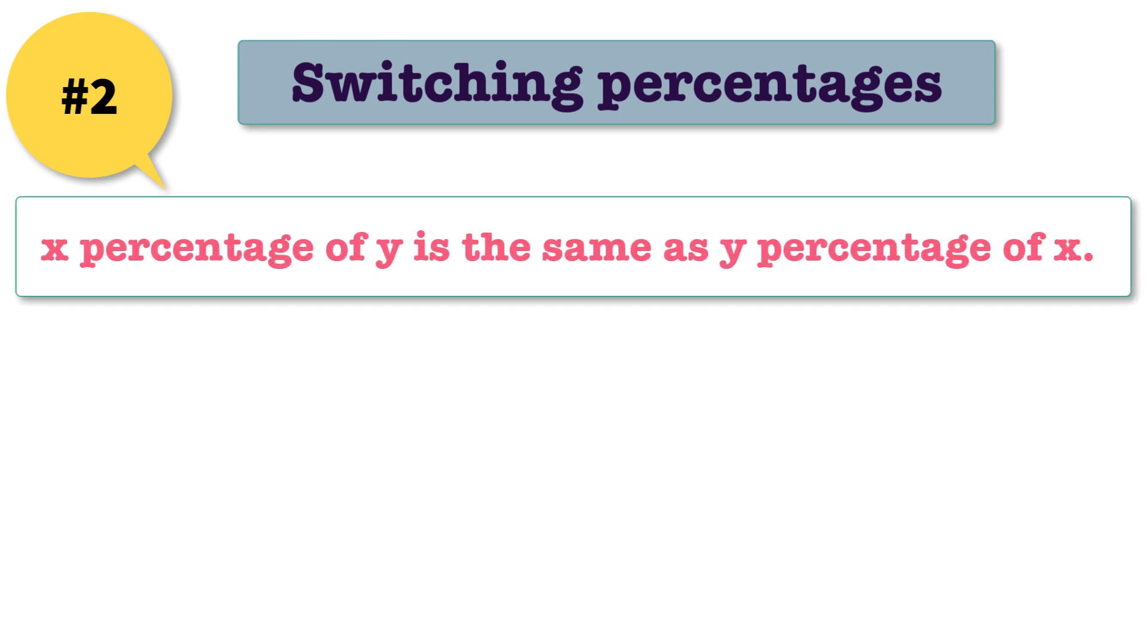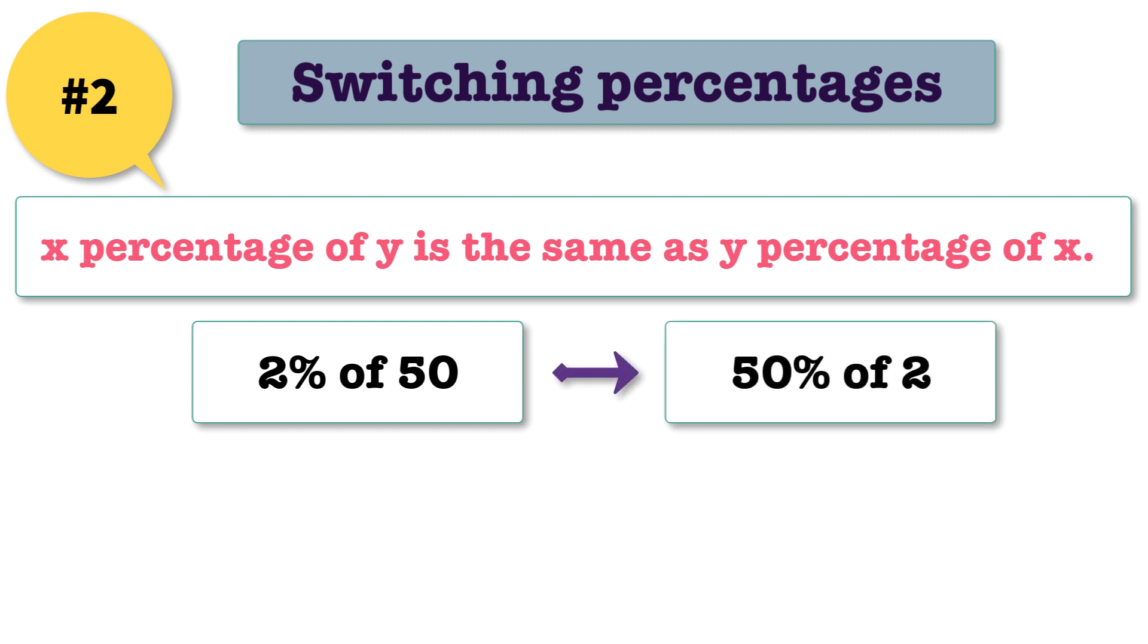Trick 2: switching percentages. x percentage of y is the same as y percentage of x. This means that if two percent of fifty is too hard to find out, you can just flip it to fifty percent of two. That's a lot easier.